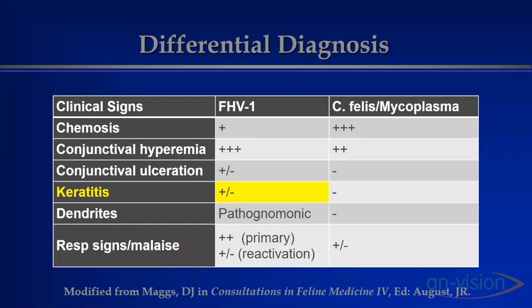Keratitis — and I don't mean just ulcers, I mean any sign of corneal inflammation: corneal blood vessels, corneal edema, corneal white blood cell infiltrate, or corneal ulceration with or without stromal loss. Is the cornea involved? To the best of our knowledge, chlamydia doesn't routinely cause corneal involvement in cats, whereas feline herpesvirus may cause it — though herpesvirus prefers the conjunctiva. If you can find evidence of keratitis, put all the pebbles on the herpesvirus side. If you can't find it, it could still be either disease.